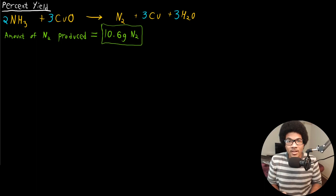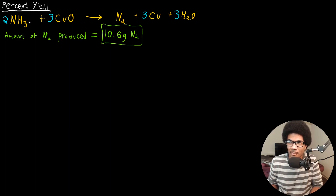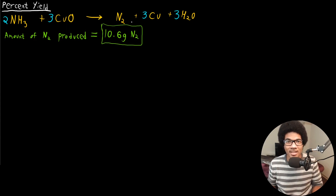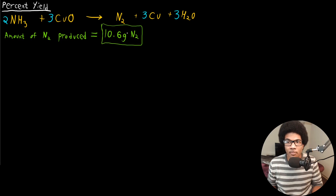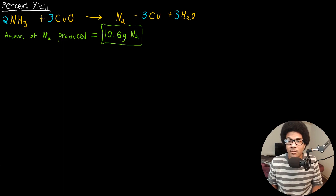In this video, we're going to introduce the concept of percent yield. If we remember from one of the previous videos, we looked at a reaction where ammonia gas was reacting over solid copper to produce nitrogen gas. In that problem, we calculated that the amount of N2 that would be produced in that reaction is 10.6 grams — we determined the limiting reactant, and using it, we would produce 10.6 grams of nitrogen gas.